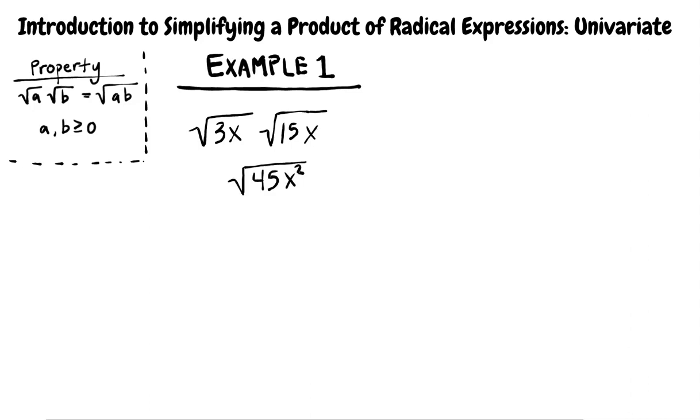Your reasoning is spot on. When we combine the two radicals using the product property of radicals, we get the square root of 45 times x squared.